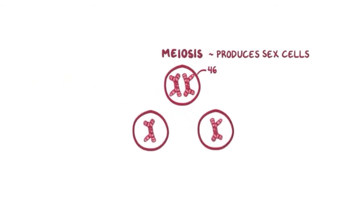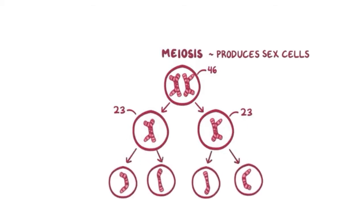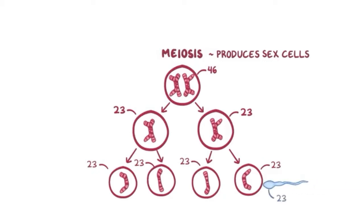After meiosis 1, the chromosomes have been separated from the homologous pairs into two cells, each with the haploid number of 23. Meiosis 2 then splits each chromosome at the centromere, but we still count each separate chromosome as 1, so the number is still 23. When a sperm cell with 23 chromosomes fertilizes the egg, a diploid zygote with 46 chromosomes is formed. This is what happens under normal meiosis.